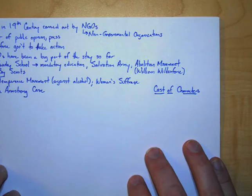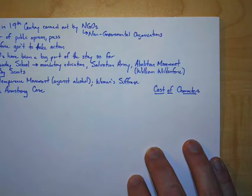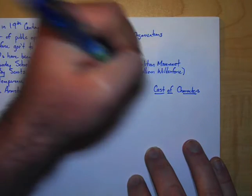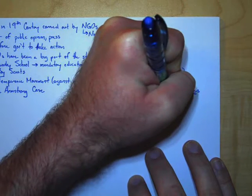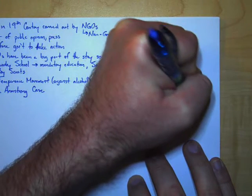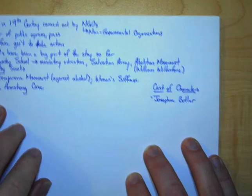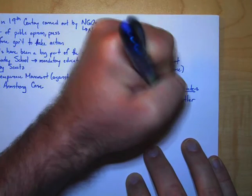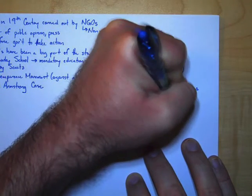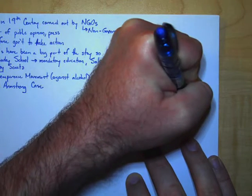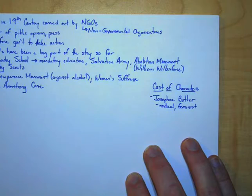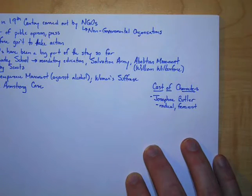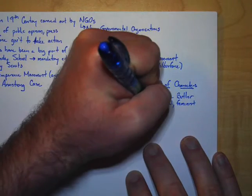The person that gets this started, her name is Josephine Butler. Josephine Butler is a radical feminist. So she's a radical and she's a feminist. So she's the first person we need to know.